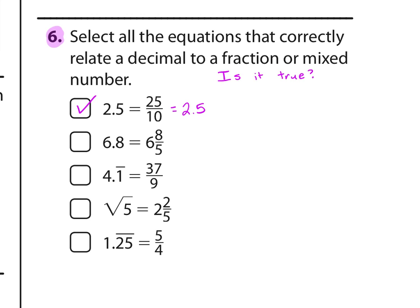6 and 8 fifths. Well, that would be 6 point something. When I say 8 divided by 5 in the calculator, I get 1.6. So I have 6.0 plus 1.6, which is 7.6. That is not equal, so it's not true.